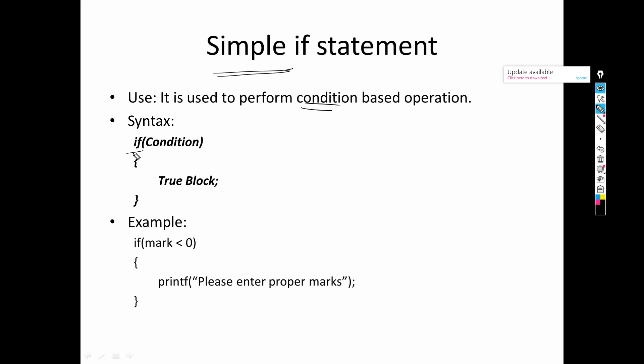What we need to do is write 'if', then specify the condition, and if this condition is true, state what we are supposed to do. For example, we check whether the marks entered are proper or improper. We can say: if marks less than 0, it is improper — a very simple English statement.